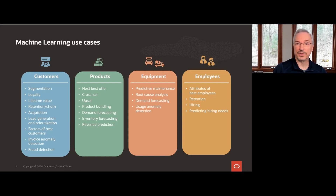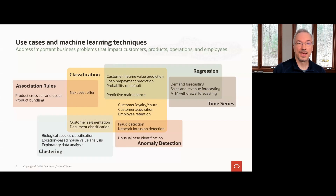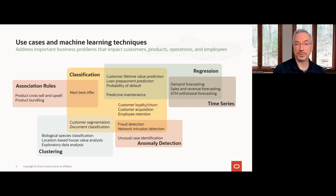On the equipment front, consider predictive maintenance: when should we service equipment? And finally, employees — what are the attributes of our best employees, and can we predict which are likely to leave? Each of these use cases is supported by one or more machine learning techniques. For example, customer lifetime value can be thought of as a classification problem — does the customer have high, medium, or low value? Or maybe it's a regression problem: what's the dollar amount the customer brings to the company? These examples just scratch the surface of what's possible.